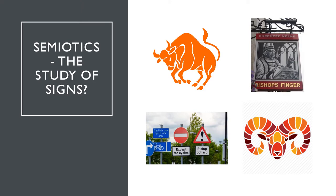Essentially that is what semiotics is — looking at, understanding, and studying how signs carry more information than just their appearance. It's not just the straightforward denotation. The picture of the bull at the top, for example: the denotation is simply an image of cattle — a bull. But because we know the wider context, we know it stands for a star sign, if that's the context it appears in.